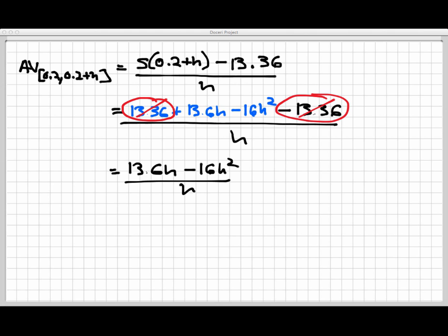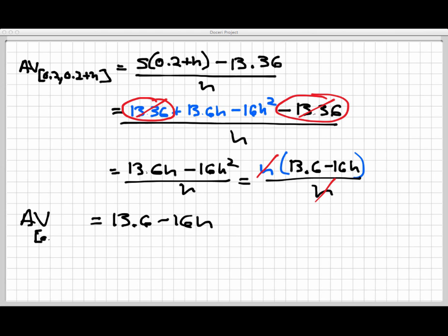And then I'm gonna be left with the following. I'll have 13.6h minus 16h squared over h. Both of the terms in the numerator have a common factor of h. And so I'm going to factor off the common factor, write what's left over. 13.6 minus 16h over h. And now I have two common factors being divided by each other and they will divide off. And so I have an interesting little simpler formula here for the average velocity. And that average velocity is just 13.6 minus 16h.